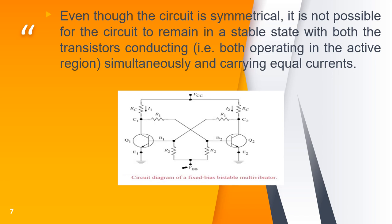Each transistor has one collector resistance. At the base of each transistor, R2 is connected to minus VBB, and both collector resistances are connected to VCC. Even though the circuit is symmetrical, it is not possible for the circuit to remain in a stable state with both transistors conducting simultaneously and carrying equal currents I1 and I2.